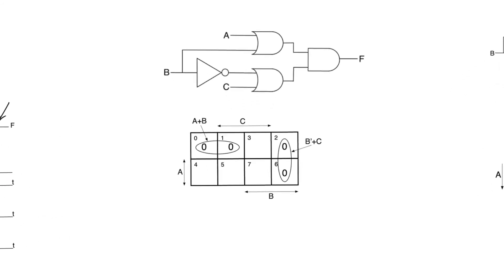Consider an example circuit which suffers from a static zero hazard — a product of sums circuit. The variable which will cause the static hazard is clearly variable B, because B is the only variable that has multiple paths through the circuit. A and C each have only a single path. B is also the only variable that appears in true and complement form, so it's the only variable that can produce a glitch. The complement path for B passes through an additional inverter, creating differential delay. The output is (A + B)(C + B_bar), which can exhibit a glitch when B transitions.